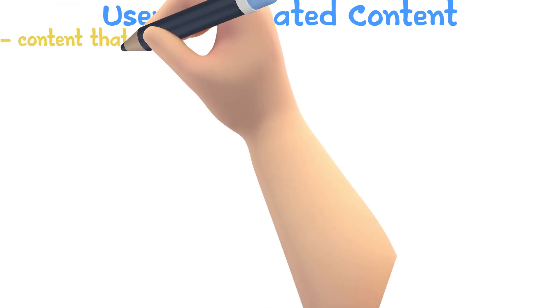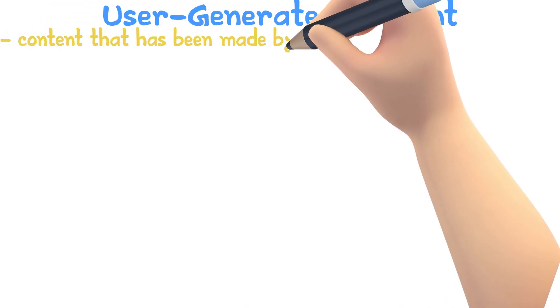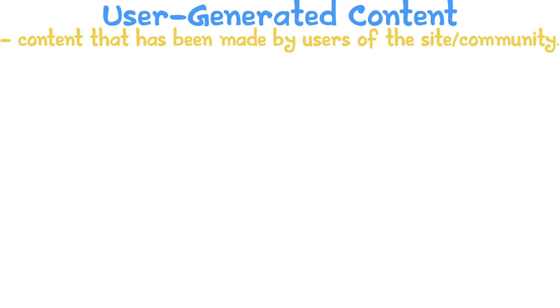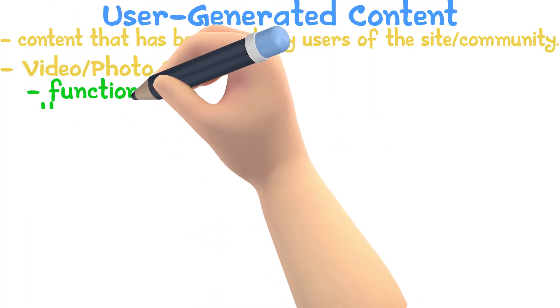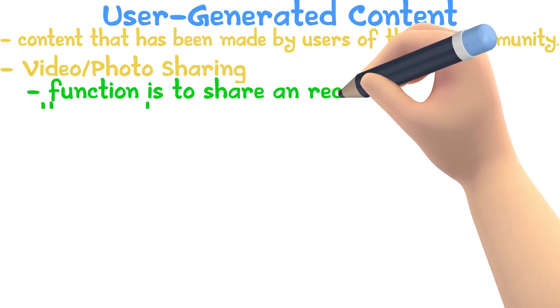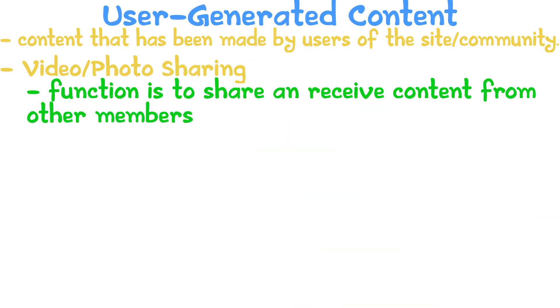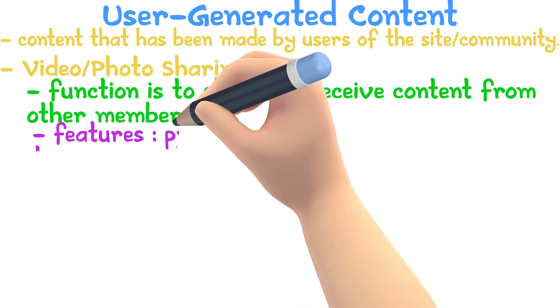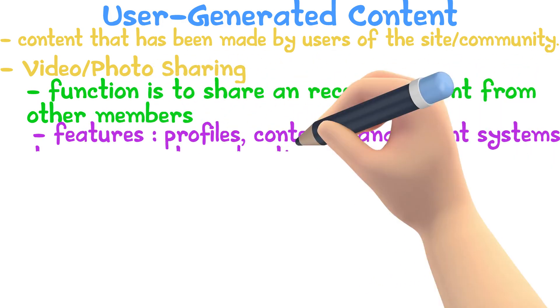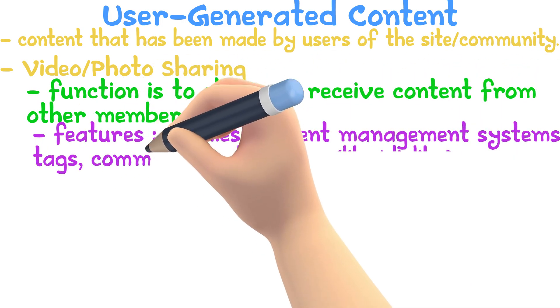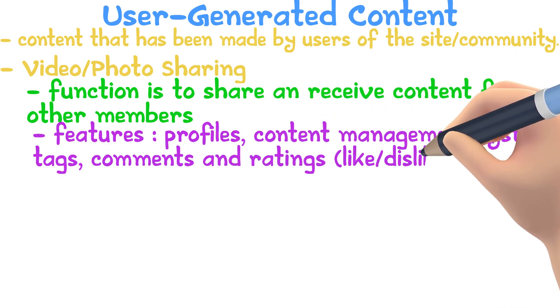User Generated Content is the content that has been made by users of the site or community. Video or Photo Sharing: the function of video or photo sharing sites is to share and receive content from other members. The features of these sites include profiles, content management systems, tags, comments, and ratings.